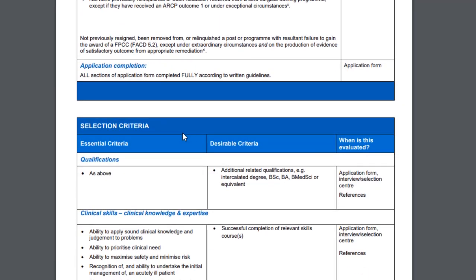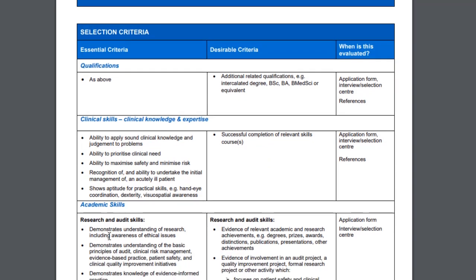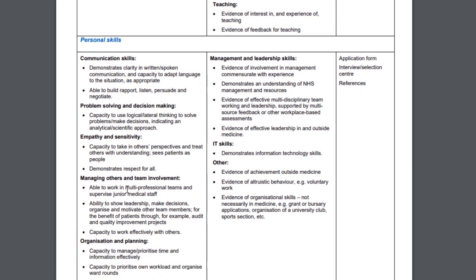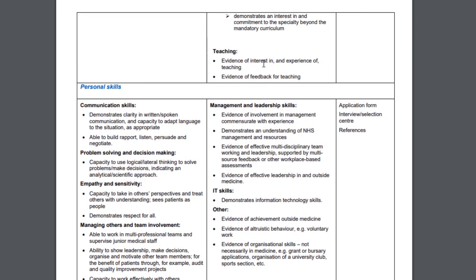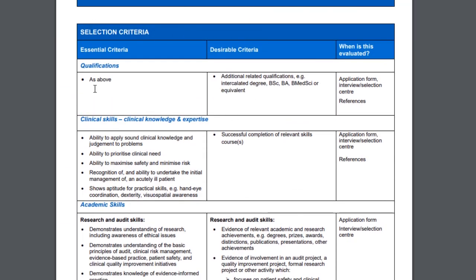If you get past the entry criteria, the selection criteria are divided into essential and desirable criteria. Reading through these tells you what you need to have in your portfolio before making your training application — for example, research and audit skills (they want an audit done), communication and organizational planning skills. You can prove this through e-learning modules or one-day management and leadership courses. If you can provide evidence of teaching with feedback, that can fill the desirable criteria.